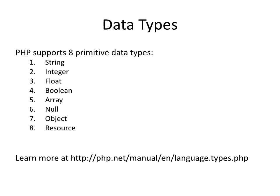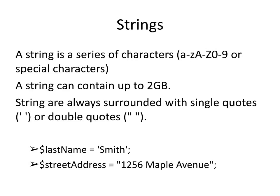PHP also supports eight primitive data types: string, integer, float, boolean, array, null, object, and resource. You can learn more about primitive data types by following the URL that appears on the screen, located at php.net. Let's take a moment and discuss each of these eight primitive data types.